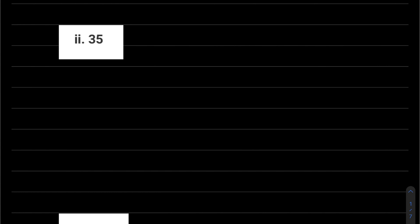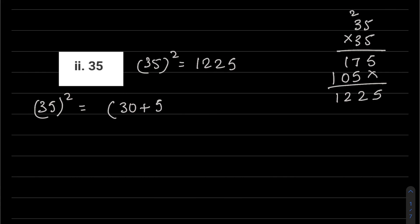Second part: 35. So we have to find 35 squared. 35 squared can be found by multiplying 35 into 35. So 5 fives are 25, 5 threes are 15, 16, 17, 3 fives are 15, 3 threes are 9 and 10. So 35 squared is 1225. If we do it by the second method, then 35 squared can be written as 30 plus 5 whole squared.